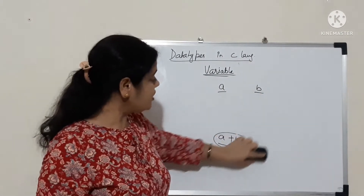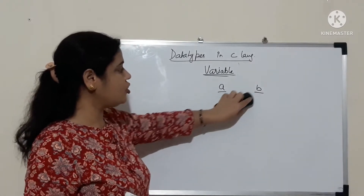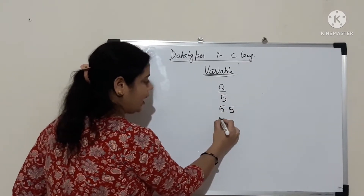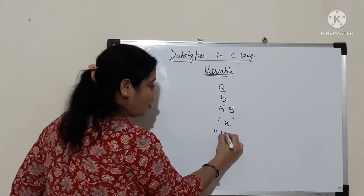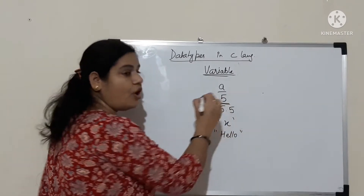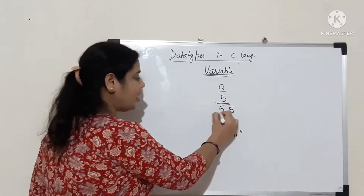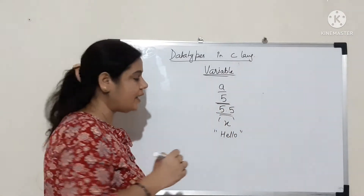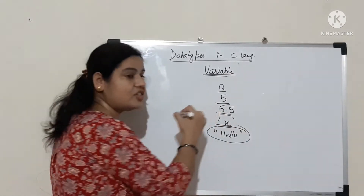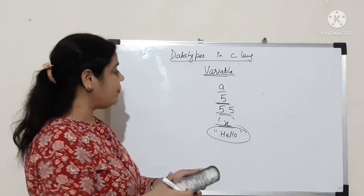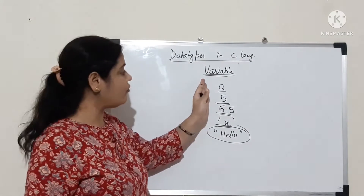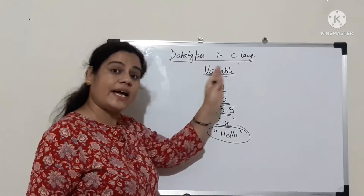Now, which type of value will A store? It can store 5, 5.5, 'X', or 'hello'. 5 is a whole number, 5.5 is a decimal number, X is a character, and hello is a string — a block of characters. The type of value A is going to store is called the data type of A.